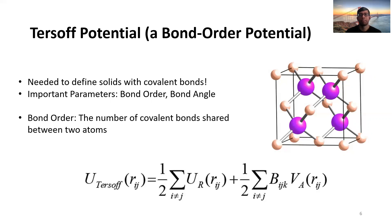The bond order is, when you consider two atoms, the number of covalent bonds shared between these two atoms is called their bond order.